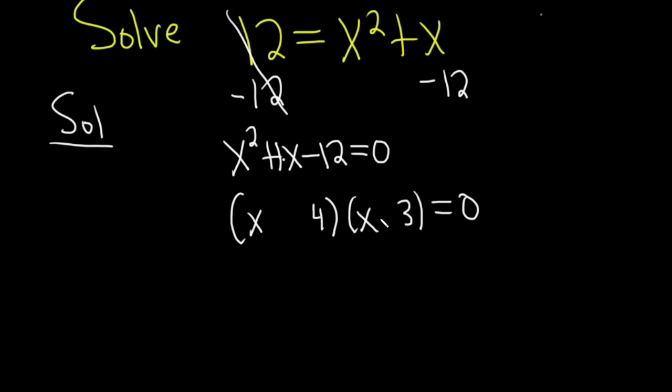And if we make the 3 negative and the 4 positive, when we add these, it'll be 4 plus negative 3, which is 1. That looks okay. And then 4 times negative 3 is negative 12.